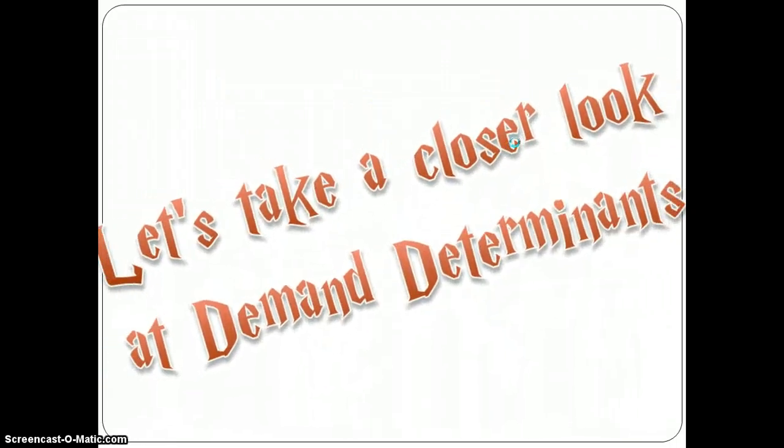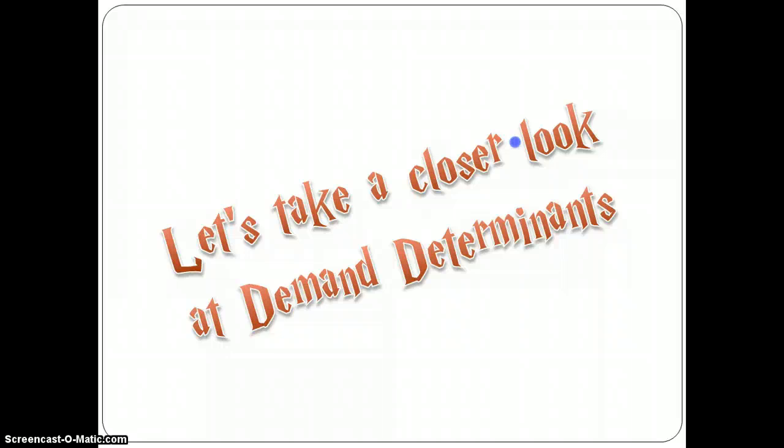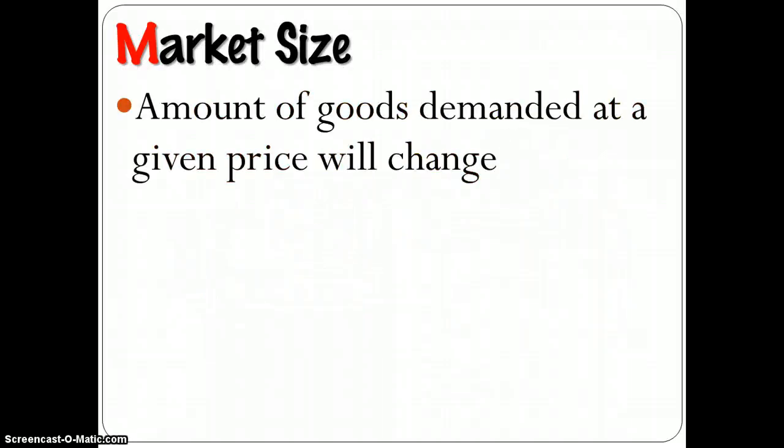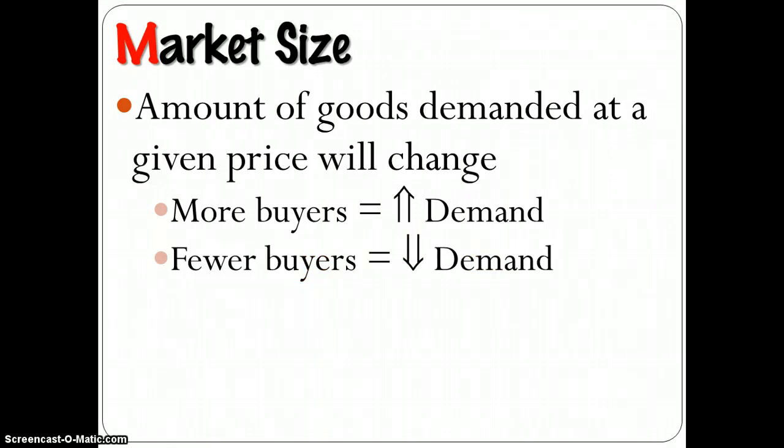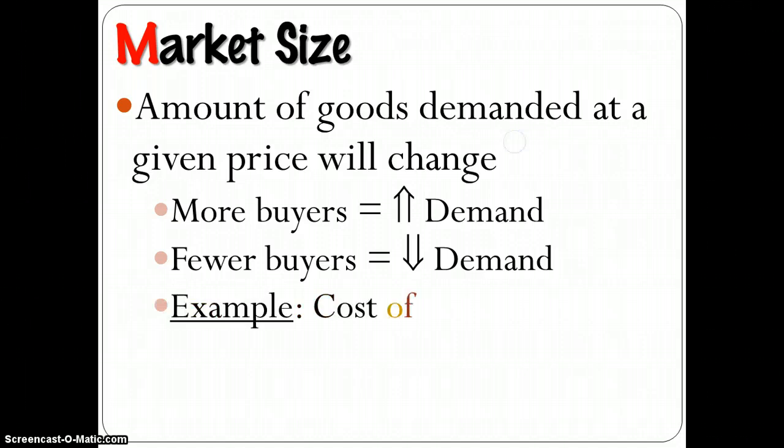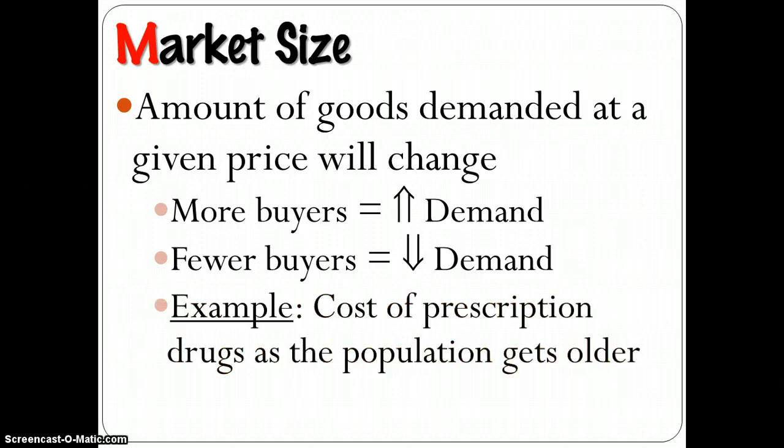So let's look at the demand determinants in a little more detail. When it comes to market size, what we're talking about here is the amount of goods demanded at a given price. That's a shift in demand. And we know that if there are more buyers, there is a shift in demand. Fewer buyers leads to a left shift in demand. And if you want to know why, let's think about the cost of prescription drugs as population gets older. As there are more and more people getting older, there's a bigger market for prescription drugs, and that is going to change our demand schedule as there are more and more people looking for and seeking this limited good known as prescription drugs.